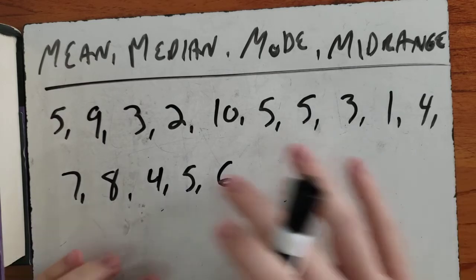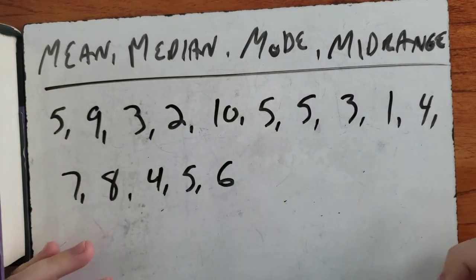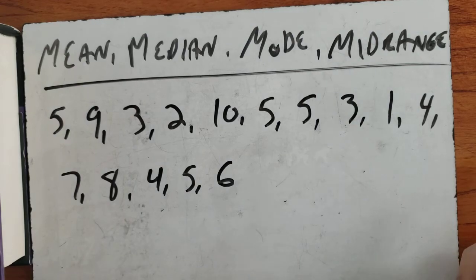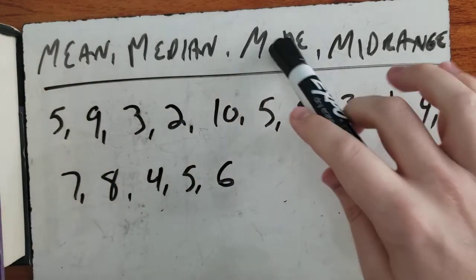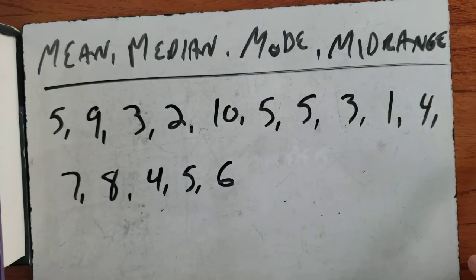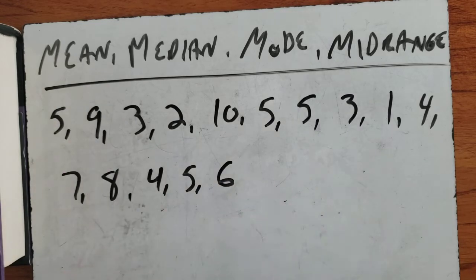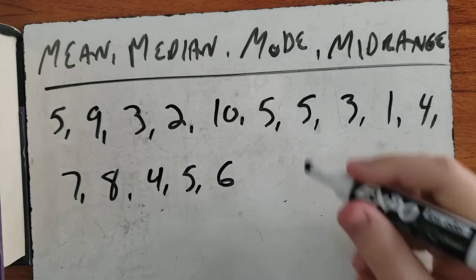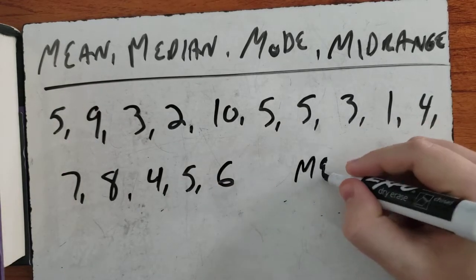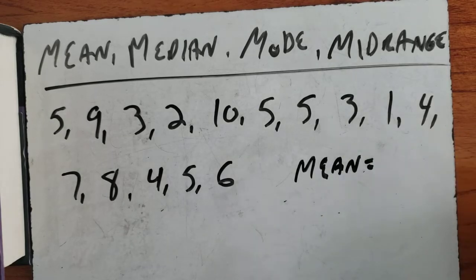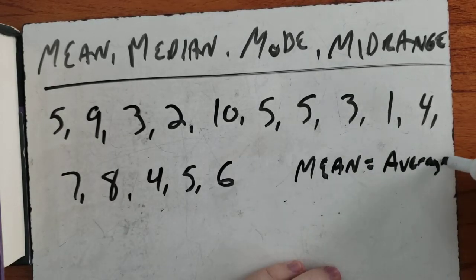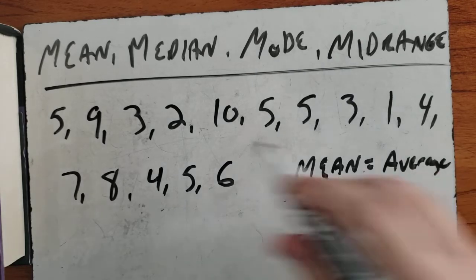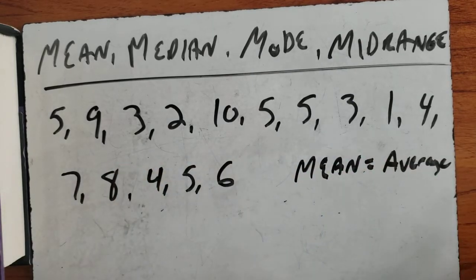So we have our set of numbers — our data set. We're going to find mean, median, mode, and mid-range of all the numbers here. First thing we do is find the mean. The mean is your average — your average of all the numbers together.